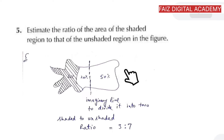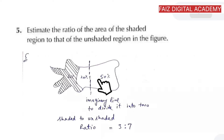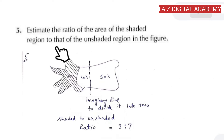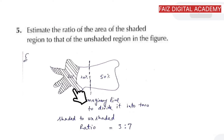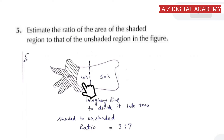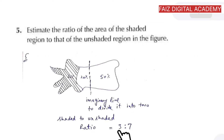In question number five, a figure shows two regions: a shaded region and an unshaded region. We need to estimate the ratio of the area of the shaded region to the unshaded region. We divide the figure with an imaginary line — 50% on each side — then estimate that about 30% of the figure is shaded and 20% is unshaded, giving a shaded to unshaded ratio of 3:7.